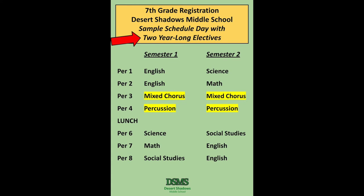Let's take a moment now to look at how a 7th grader's day is set up at Desert Shadows Middle School. You have eight periods during the school day — seven of the periods are classes, and one period is lunch. As you look at this example, you can see the core academic classes listed in black letters: English, Science, Social Studies, and Math. You will automatically be scheduled for these core academic classes based on your 6th grade teacher's recommendations and your math placement test in the spring. The other two classes, highlighted in yellow, are elective classes that you get to choose from the elective sheet.